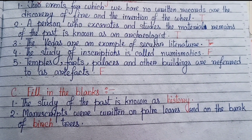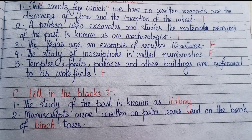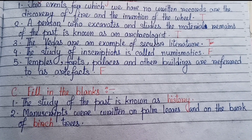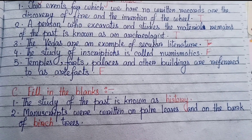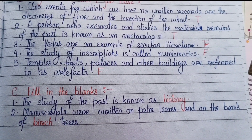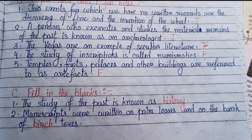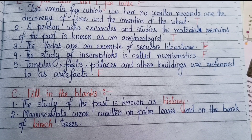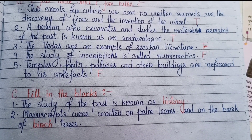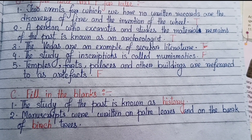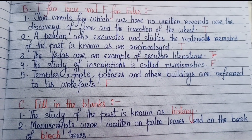Next, Section C: Fill in the blanks. Number one: the study of the past is known as History. Number two: manuscripts were written on palm leaves and on the bark of birch trees.